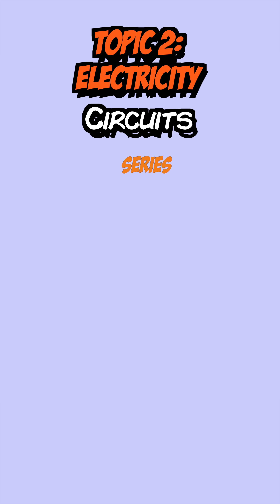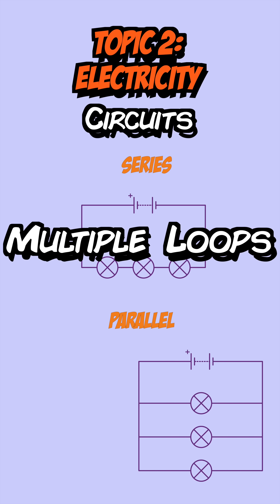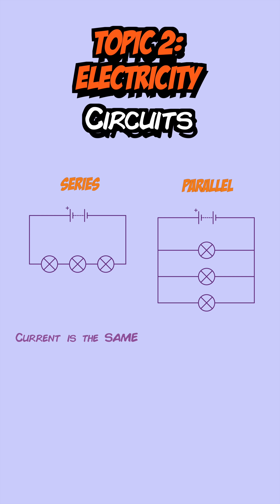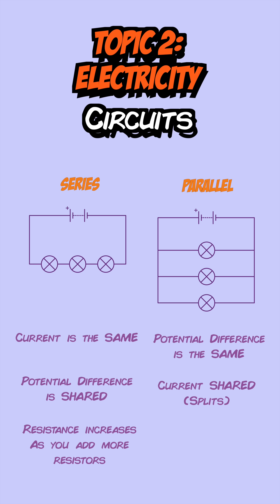Circuits can be one of two types: series circuits, where all components are on one loop, and parallel circuits, where they're on different loops. In series circuits, current is the same everywhere and potential difference is shared between the components. In parallel circuits, potential difference is the same on each branch and current splits at each branch. Resistance increases as you add more resistors in series, but decreases when you add them in parallel.